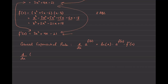For example, find the derivative of 7.3 raised to the 4x squared. First confirm it's exponential: the base 7.3 is positive and not one, and the variable is in the power — yes. Applying the rule: ln of 7.3, times 7.3 to the 4x squared, times the derivative of the exponent 4x squared, which is 8x. That's it — don't simplify further. You won't get extra points for it, and you risk losing time and points.